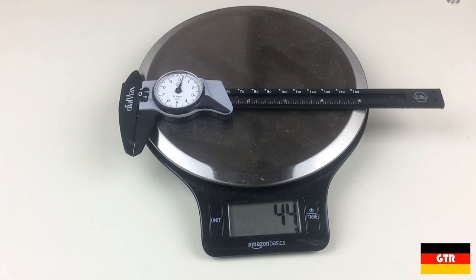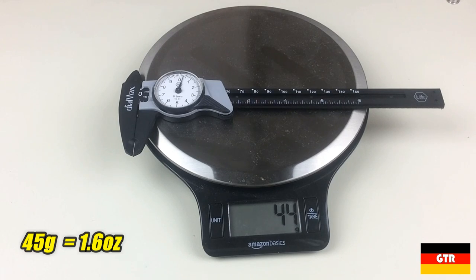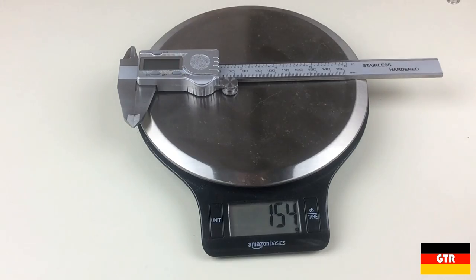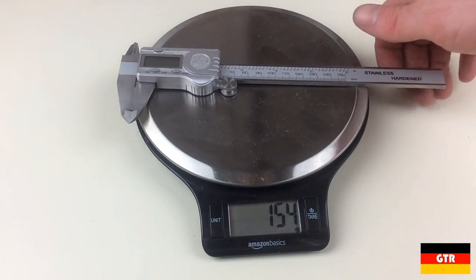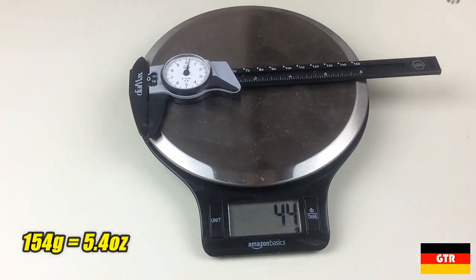One of the first things you'll notice is how light this unit actually is. The included documentation says that it comes in at 45 grams, which is around what I measured at 44 grams. Compare this to a typical stainless caliper, for which the 150 millimeter digital version I have comes in at 154 grams, over three times as heavy.